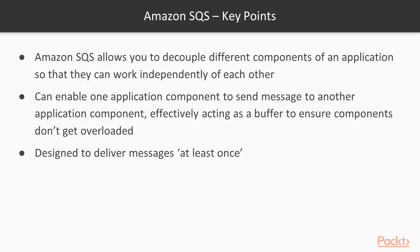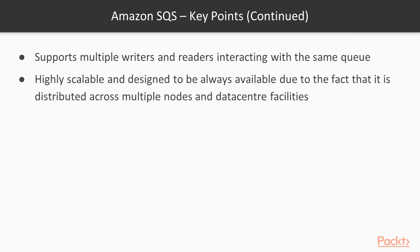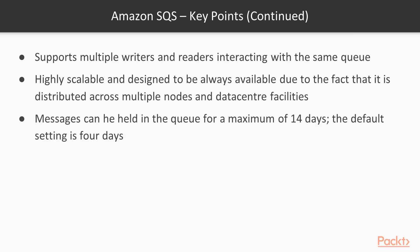Amazon SQS is designed to deliver messages at least once. It offers both standard and FIFO (first-in, first-out) queues. SQS supports multiple writers and readers interacting with the same queue. It is highly scalable and always available due to being distributed across multiple nodes and data center facilities. Messages can be held in the queue for a maximum of 14 days, with the default setting being four days.